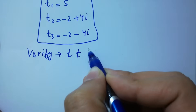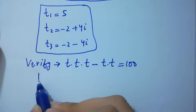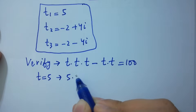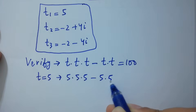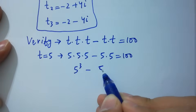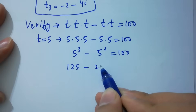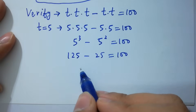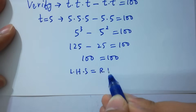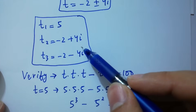Substituting t equals 5 into the original equation: 5 times 5 times 5 minus 5 times 5 equals 100. That is 5 cubed minus 5 squared equals 100, giving 125 minus 25 equals 100, which is 100 equals 100. Left hand side equals right hand side, which confirms t equals 5 is correct.